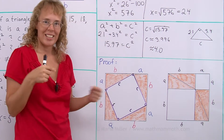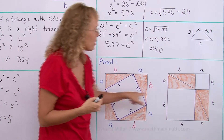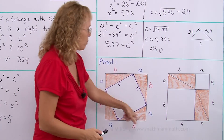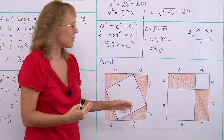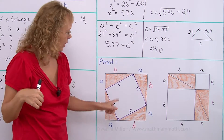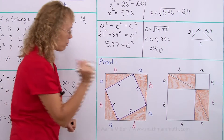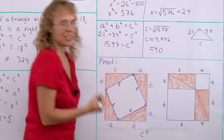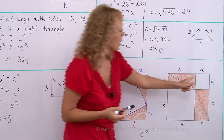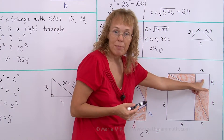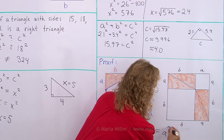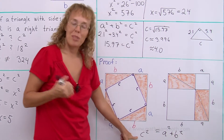Now we compare the white areas. The white area in the first arrangement must equal the total white area in the second, because both have the same large square with the same four orange triangles. In the first arrangement, the white area is a square with side c, so its area is c squared. In the second arrangement, the white areas are one square of area a squared and one square of area b squared. So the white areas are a squared plus b squared — and that is the Pythagorean theorem.